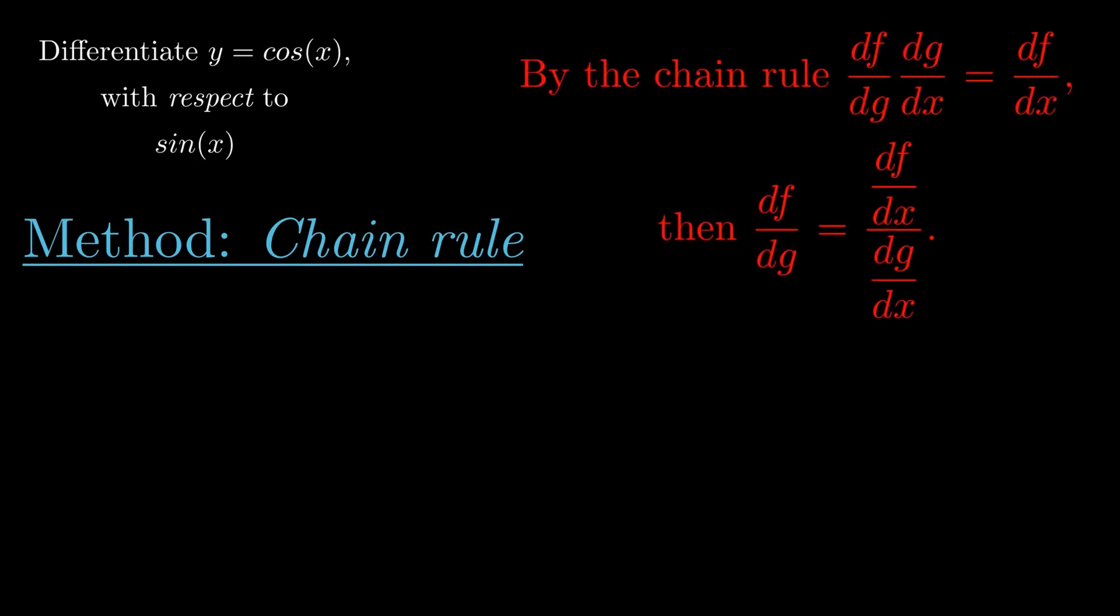By the chain rule, we have that the derivative of f with respect to g multiplied by the derivative of g with respect to x is equal to the derivative of f with respect to x. Upon dividing both sides by the derivative of g with respect to x, we get the following formula.